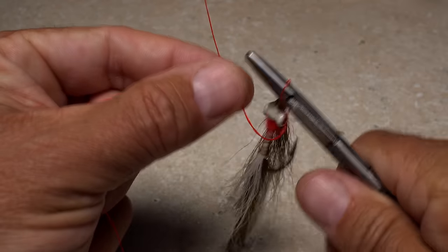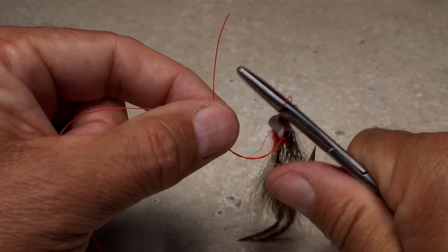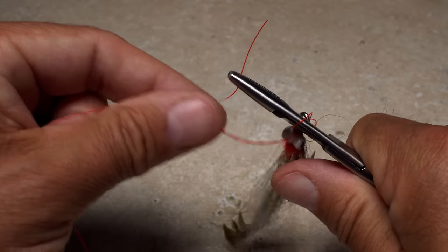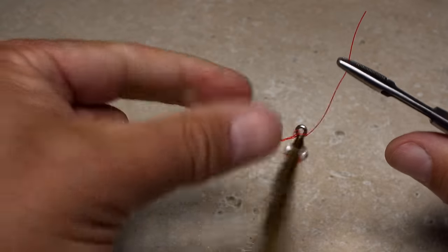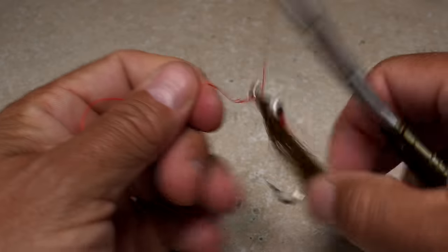Once the turns are complete, open the jaws of the mitten clamp and use them to grab the tag end. Pull the tag back through the overhand knot loop and then pull to begin closing the knot.